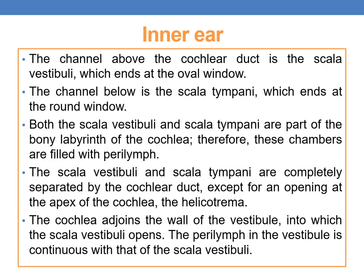The scala vestibuli is the channel above the cochlear duct and ends at the oval window; the scala tympani is the channel below and ends at the round window. Both the scala vestibuli and scala tympani are part of the bony labyrinth and are therefore filled with perilymph. They are completely separated by the cochlear duct except for an opening at the apex of the cochlea called the helicotrema. The perilymph in the vestibule is continuous with that of the scala vestibuli.